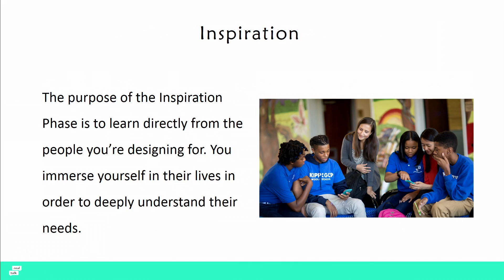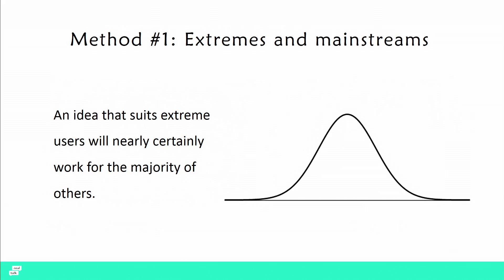We went through the first phase of design thinking. The purpose of this phase is to learn directly from the people you're designing for — you immerse yourself in their lives in order to deeply understand their needs. The first thing we did was identify extremes and mainstreams. Design thinking says that an idea that suits extreme users will nearly certainly work for the majority of others, so explicitly identifying people on the edges and working with them will inherently include everybody else in the middle.